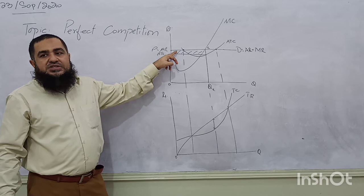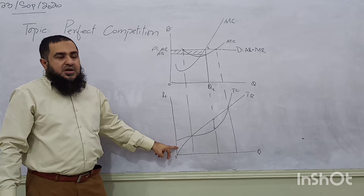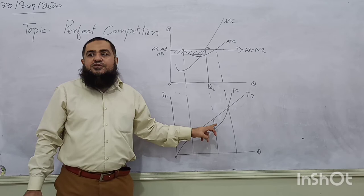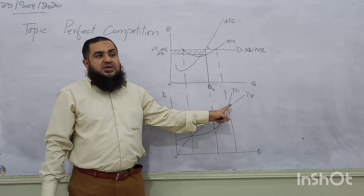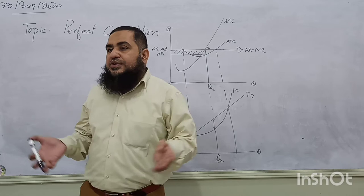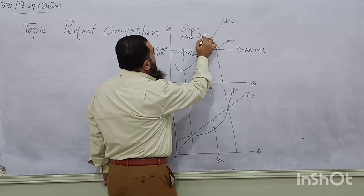Before the equilibrium point, average cost was higher than average revenue, so total cost is higher than total revenue and the firm is having a loss. After this point, the gap increases — total revenue lies above total cost. The gap is maximum where the slope of total revenue equals the slope of total cost. After that, average revenue and average cost are again equal, and total revenue equals total cost. At the profit-maximizing output level, the firm is earning supernormal, or abnormal, profit.